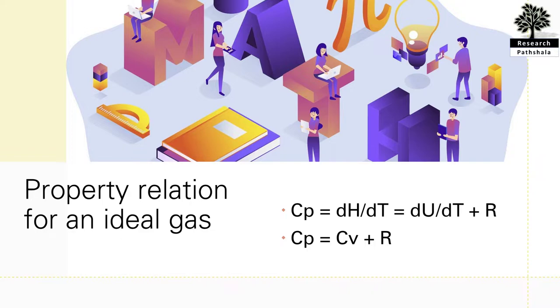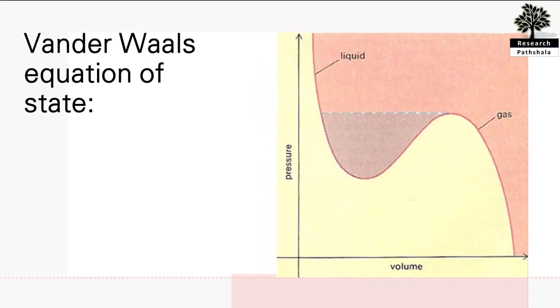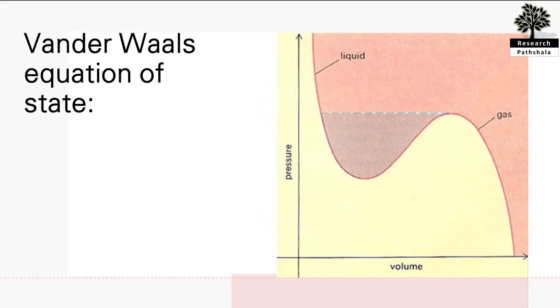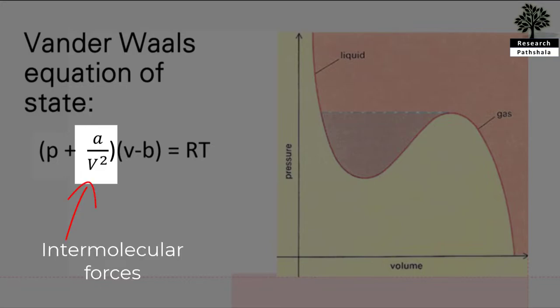Now moving towards the next equation of state, known as the van der Waals equation of state. Van der Waals, by applying the laws of mechanics to individual molecules, introduced two correction terms in the ideal gas equation. For a real gas with n = 1, it is written as (P + a/V²)(V - b) = RT. The coefficient a is introduced to account for the mutual attraction between molecules. The term a/V² is called the force of cohesion and accounts for intermolecular forces of attraction.